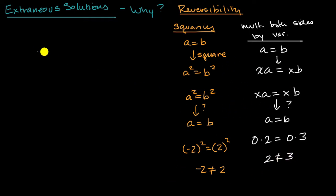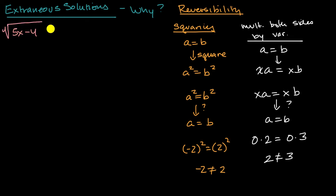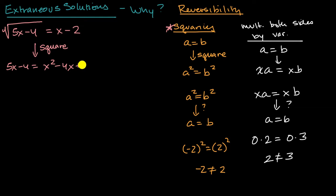Now, how does all of this connect to the extraneous solutions you've seen when you're solving radical equations or when you're solving equations with rational expressions on both sides? Well, let's look at an example. Let's solve the radical equation: the square root of five x minus four is equal to x minus two. A typical first step is to get rid of this radical by squaring both sides. So squaring both sides gives five x minus four is equal to x squared minus four x plus four.